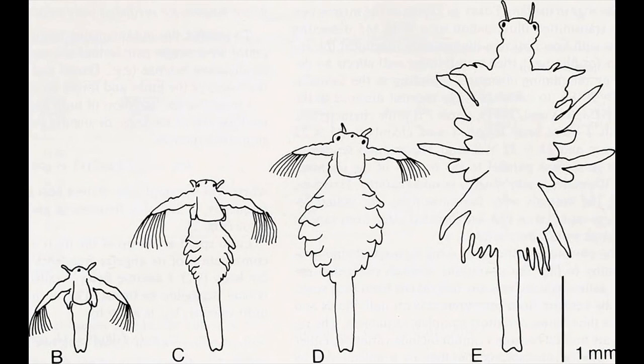Fixed Joints: There are some bones in our head that are joined together at some joints. The bones cannot move at these joints. Such joints are called fixed joints. When you open your mouth wide, you can move your lower jaw away from your head, isn't it? Try to move your upper jaw now. Are you able to move it? There is a joint between the upper jaw and the rest of the head which is a fixed joint.